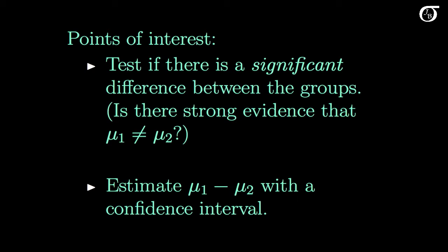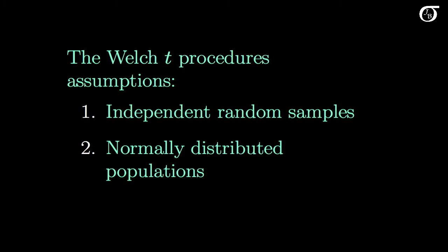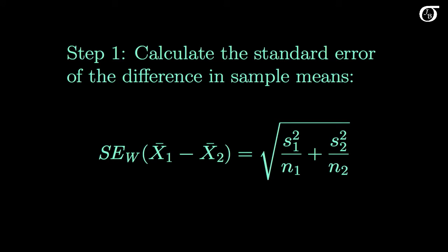We might also want to estimate the difference in population means with a confidence interval. These are the same goals as with the pooled variance t procedure. For the Welch procedure, the assumptions are independent random samples and normally distributed populations — the same as for pooled variance, except we do not assume equal population variances. We will calculate the Welch standard error, denoted with a 'w' subscript.